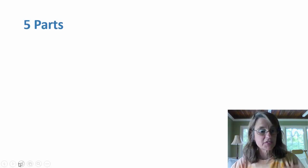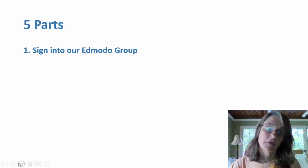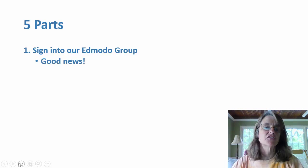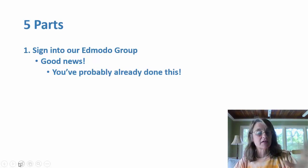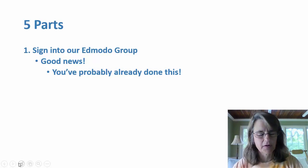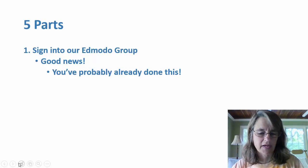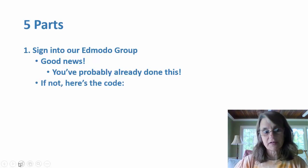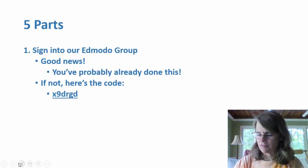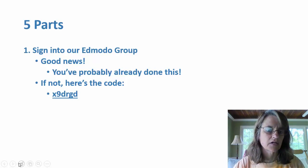Your summer assignment has five parts. The first is to sign into our Edmodo group, which good news — you've probably already done that. At the end of last school year you got a little slip of paper with an Edmodo code on it. If you haven't joined yet, the code is X9DRGD.